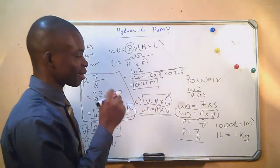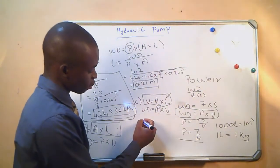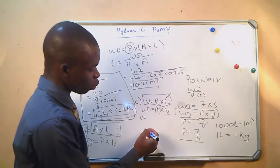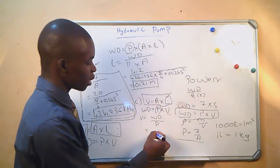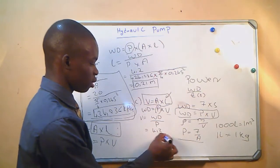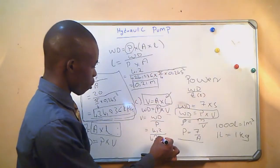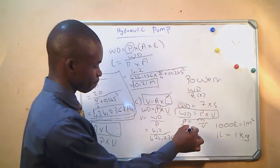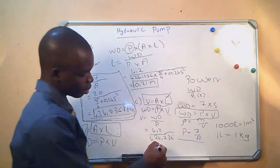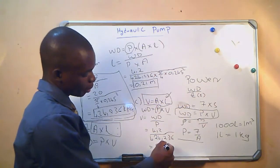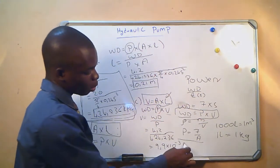Making V the subject gives us volume equals work done divided by pressure, which is 4.2 divided by 424.236. Our volume is 9.9 × 10⁻³ cubic metres.